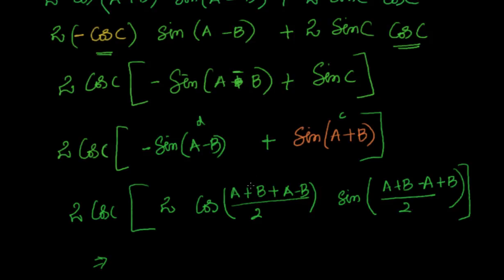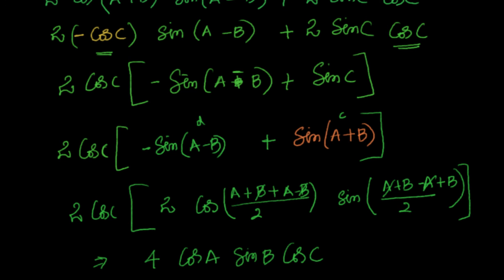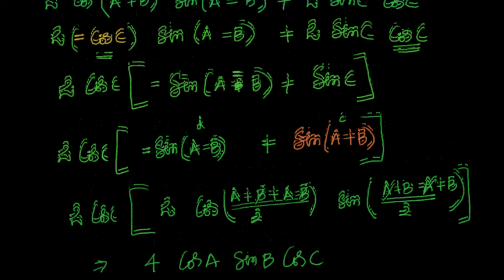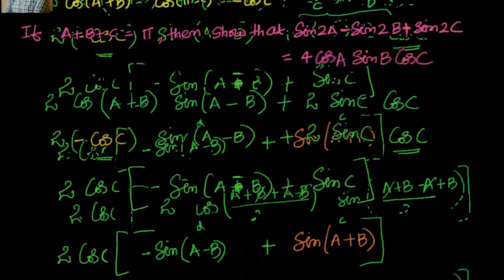Looking at the formula sinC minus sinD — this gives 2 · 2 = 4, with the a and b terms simplifying to give cosA and sinB respectively, multiplied by cosC. So the result is 4cosA sinB cosC, which is exactly what we had to prove.